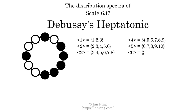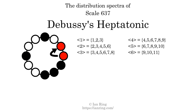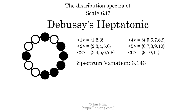And finally, the generic interval of six scale steps comes in 3 different specific interval sizes: 9 semitones, 10 semitones, and 11 semitones. The spectrum width of this generic interval is 2. The spectrum variation is the sum of all the widths divided by the number of tones. The spectrum variation of this scale is 3.143.